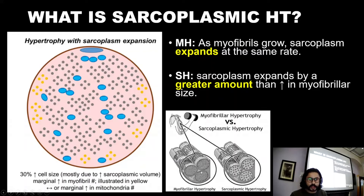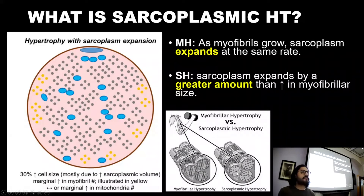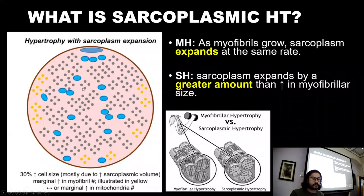As this diagram here illustrates, that process makes the muscle fiber larger. However, with sarcoplasmic hypertrophy, the sarcoplasm expands by a greater amount than the increase in myofibrillar size. We can see in this diagram that the water part is proportionally greater. Compared to myofibrillar hypertrophy, where you have lots of myofibrillar bundles packed together, in sarcoplasmic hypertrophy it is the water part which expands at a greater rate than the myofibrillar protein content. The myofibrils become more spaced out, and we see roughly a 30% increase in cell size, mainly due to increased water content.